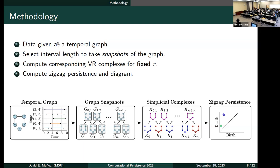And then for the simplicial complexes, we will have a fixed r value for the rips complex. So we will obtain a sequence of simplicial complexes, and then finally we compute the zigzag persistence and the persistent diagram.